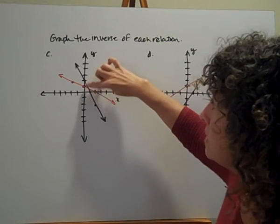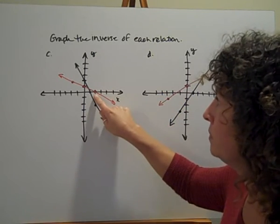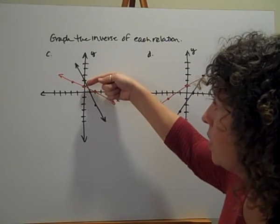So this ordered pair here is (0,2). So when I go to graph its inverse, it's going to be (2,0) over here. This ordered pair I have is (1,0). So when I graph its inverse, it's going to be (0,1).